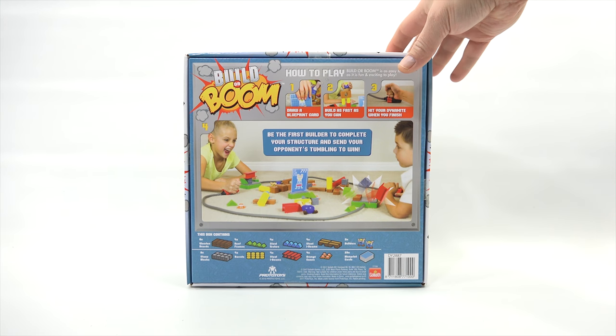Draw a blueprint card. So that's a blueprint card. That's going to give you what to build. Build as fast as you can, so it's a race against each other. And then hit your dynamite when you finish. Be the first builder to complete their structure and send your opponents tumbling to win. Now, below that is all of the different pieces that come in the box, so we'll have to figure all that out.